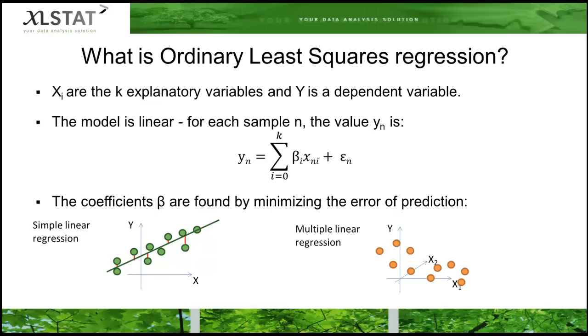In the case of multiple linear regression, it gets a bit more complex, but we will use a visual example to illustrate it. We can take two X variables, and as you see, we can find a regression plane that minimizes the error of prediction.